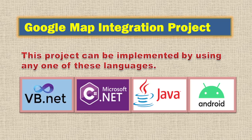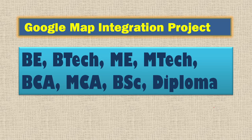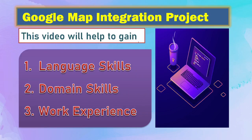Google Map integration — this project can be implemented using VB.NET, C#, Java, or even Android. This will be very useful for students who are doing any of these courses. What will you learn from this? You will learn language skills — we will explain some basic coding, how the whole project works, and how the code is written. To know the details you need to learn Visual Basic, C#, or Java. But to write a project, at least you should know the complete language — if there are 15 chapters, you should know all 15 chapters to be able to write the project.